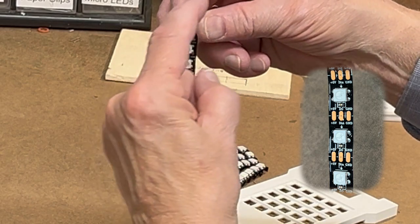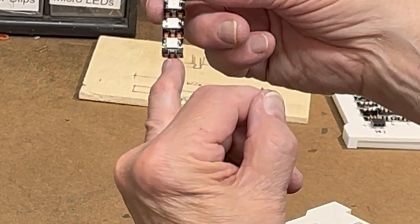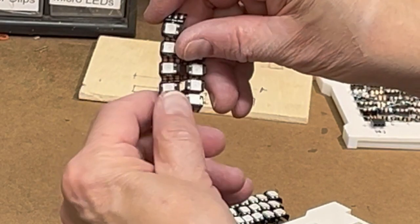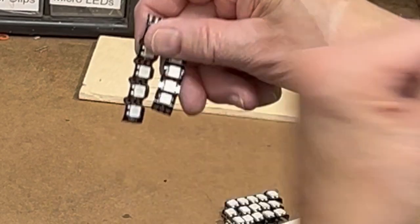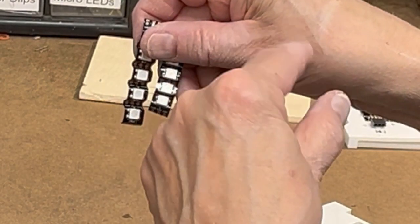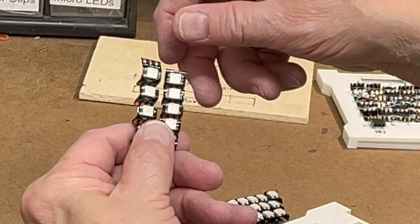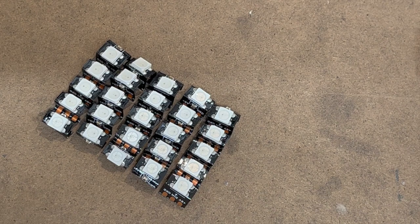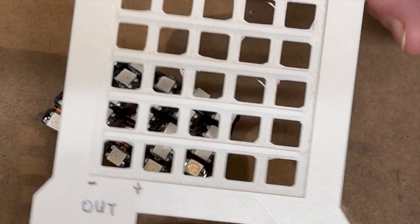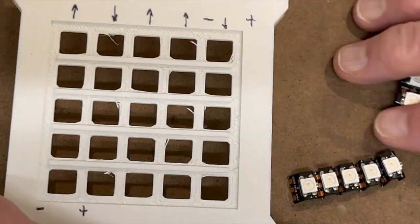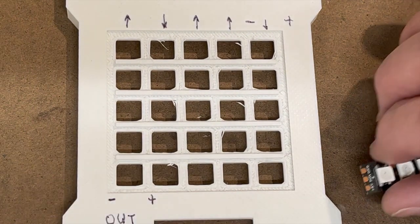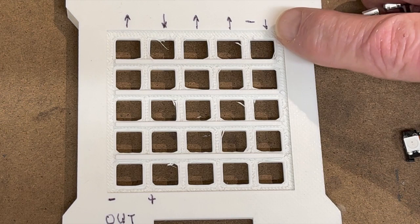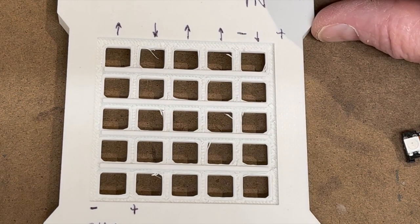Now the other very important thing about the pixels is that they have a direction. So right here is a little arrow that points down. Now the way these are going to be connected is one is going to go down this way and the output from this one is going to go to the input of the next one. That means that the arrow on the next one is going to need to point the opposite direction. We will continue this snaking operation through all five of the pixel strips.